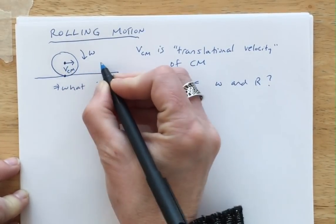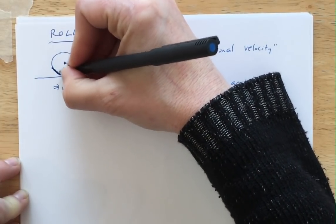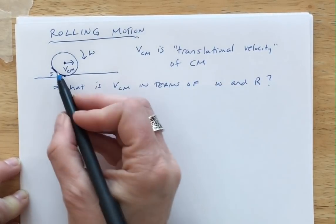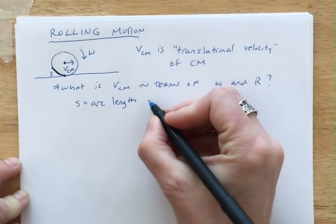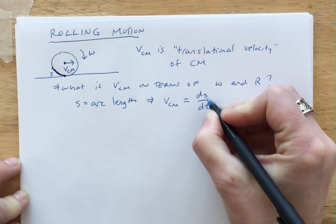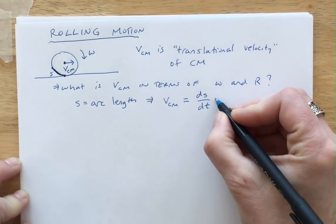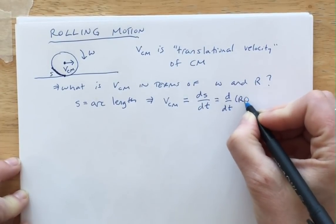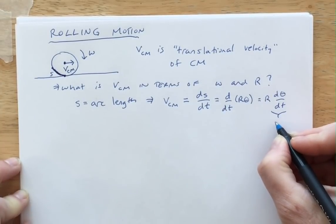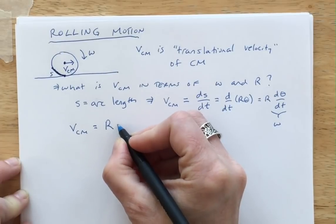To figure this out, we ask how far the wheel would go in some amount of time, which brings us to the idea of arc length. Call that arc length S. The wheel will have traveled distance S in time T. So the velocity of the center of mass, V_cm, is ds/dt — the time rate of change of arc length. Since arc length S = rθ, we get d/dt(rθ) = r·(dθ/dt) = r·ω. So V_cm = Rω.